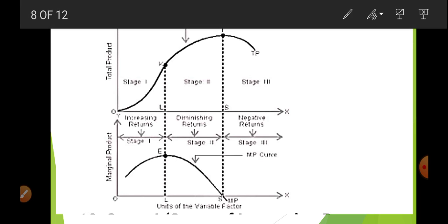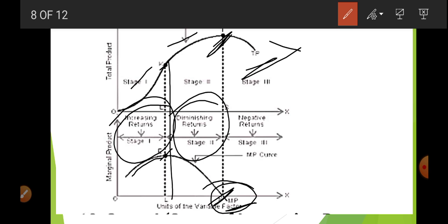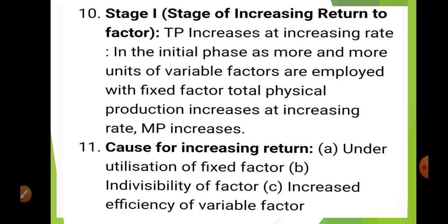Here in the diagram, you can see Stage 1, Stage 2, and Stage 3. Until point E and K, MP increases — this is Stage 1 with increasing return. Stage 2 starts when MP begins to fall, until point S where TP becomes maximum. After point S, MP becomes negative and TP starts to decrease — this is Stage 3 with negative return. When MP is increasing, it is increasing return; when MP is decreasing, diminishing return; when MP is negative, negative return.